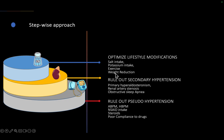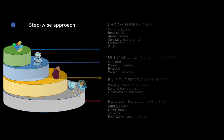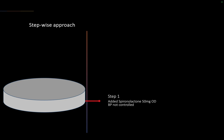Once secondary hypertension is detected, first attempt lifestyle modification — exercise, salt restriction, and weight reduction. Then we use spironolactone, beta blockers, alpha blockers, centrally acting agents, hydralazine, and increasingly ARNI. The Japanese and Chinese cardiology societies have approved ARNI as a treatment for resistant hypertension.